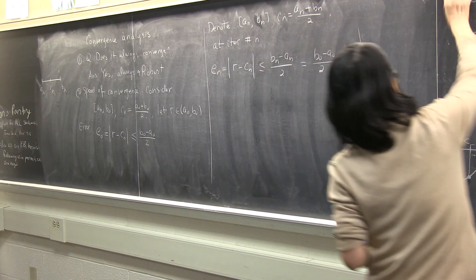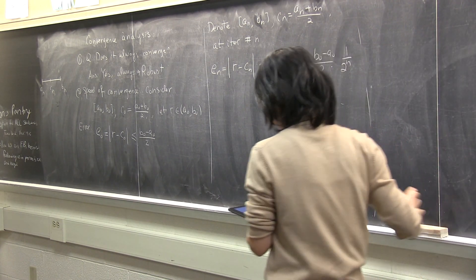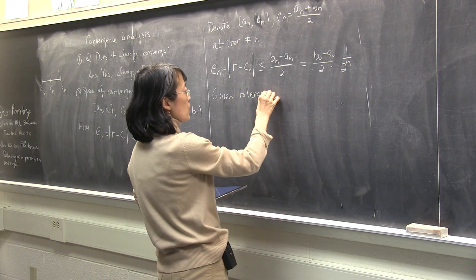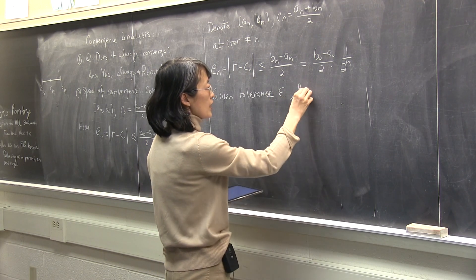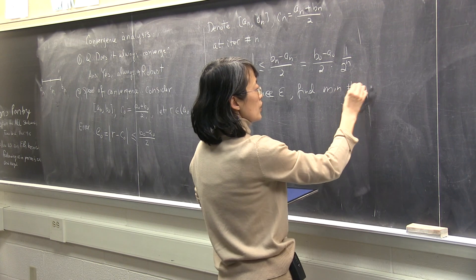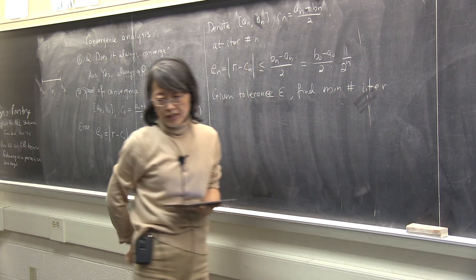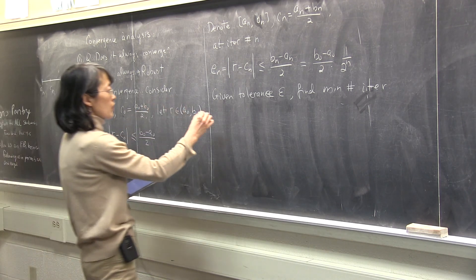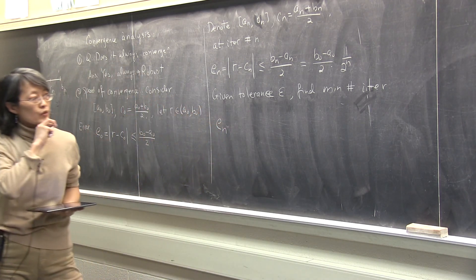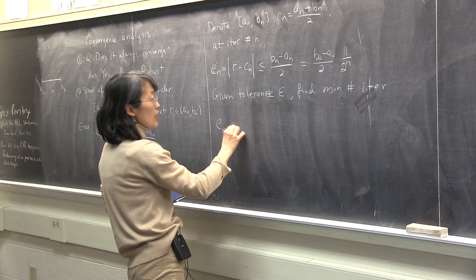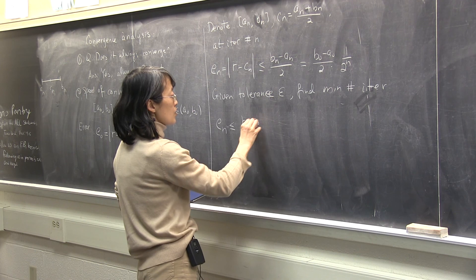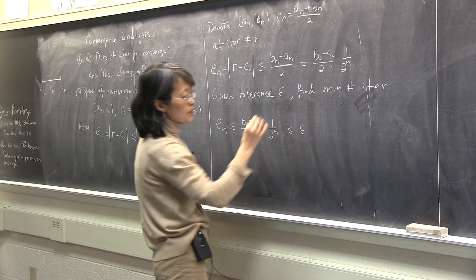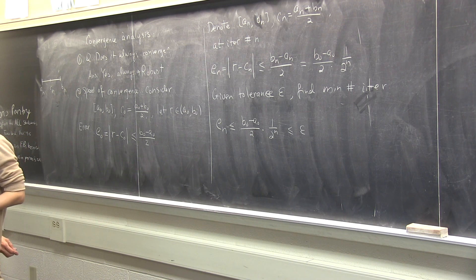So now I want to derive one thing, that is, I give you a tolerance, given tolerance, error tolerance, error measured like that. Let's call the tolerance epsilon. I want to find minimum number of iterations. So it's a reasonable thing to compute, because it's of interest, practical interest. So what do you want? You want the e n to be bounded by your tolerance, and for e n you only have a bound, which is b zero minus a zero half times 1 over 2 n, right?